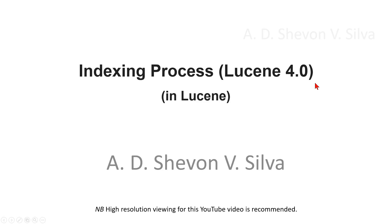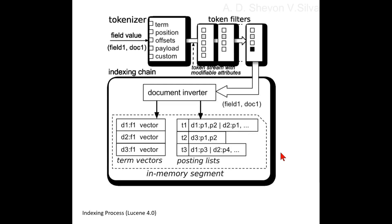Indexing process in Lucene 4.0. Here you can see indexing processing. In Lucene 4.0, the resulting token stream is finally processed by the indexing chain, and the supported attributes include term value and position.